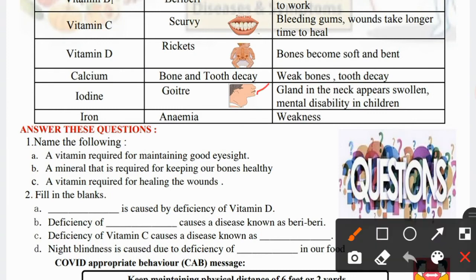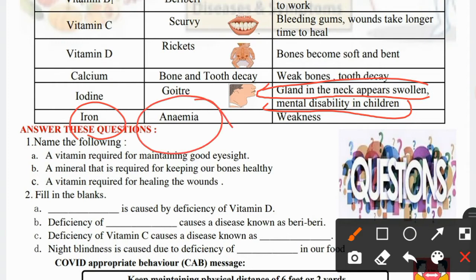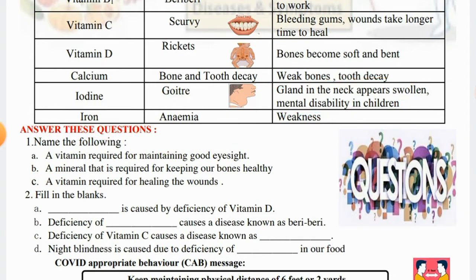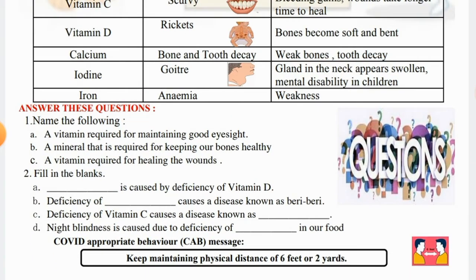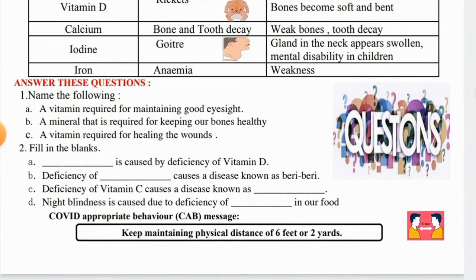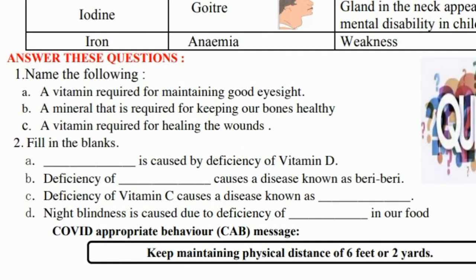Iodine deficiency symptoms: glands in the neck appear swollen and mental disability may occur in children. Iron deficiency causes anemia — weakness in the blood, which is very important for our body's functioning.